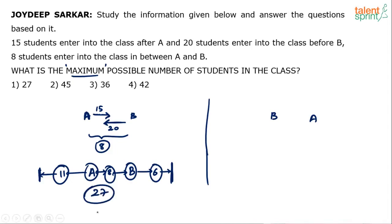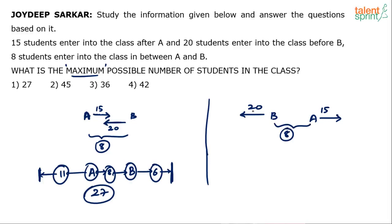That's one way of looking at it. Now swap the positions of A and B — B comes first, then A. 15 students entered into class after A, 20 students entered the class before B, and 8 students entered in between A and B. This is a straightforward calculation: 20 plus 8 equals 28, plus 15 equals 43.